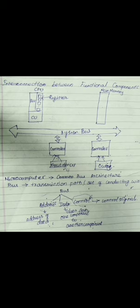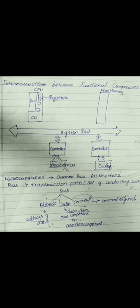Now we are going to see how all these functional components are connected — that is the interconnection between functional components. If I ask how it is connected, you will say the word 'wire.' Of course, with the help of cables, that is wires, all these things are connected. Inside our CPU, in our microcomputer, we will have communication through common bus architecture.